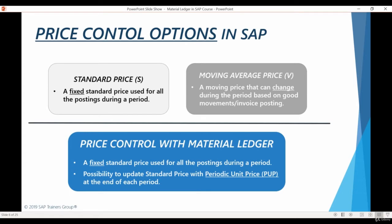When you have activated Material Ledger and Actual Costing functionality, an additional weighted moving average price based on the actual material prices of a period is calculated for your materials. This actual average price, known as periodic unit price, can be used to re-evaluate your inventory based on the actual cost at which the materials were acquired or manufactured. The details of how the system calculates this price will be discussed in the fourth chapter of this course.